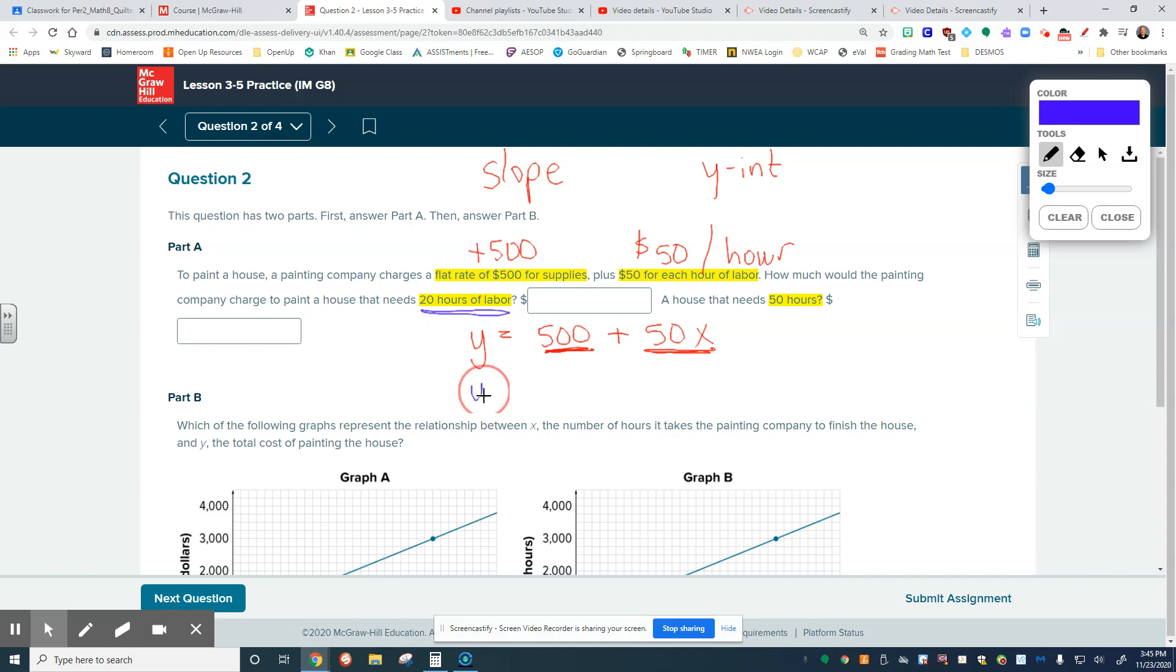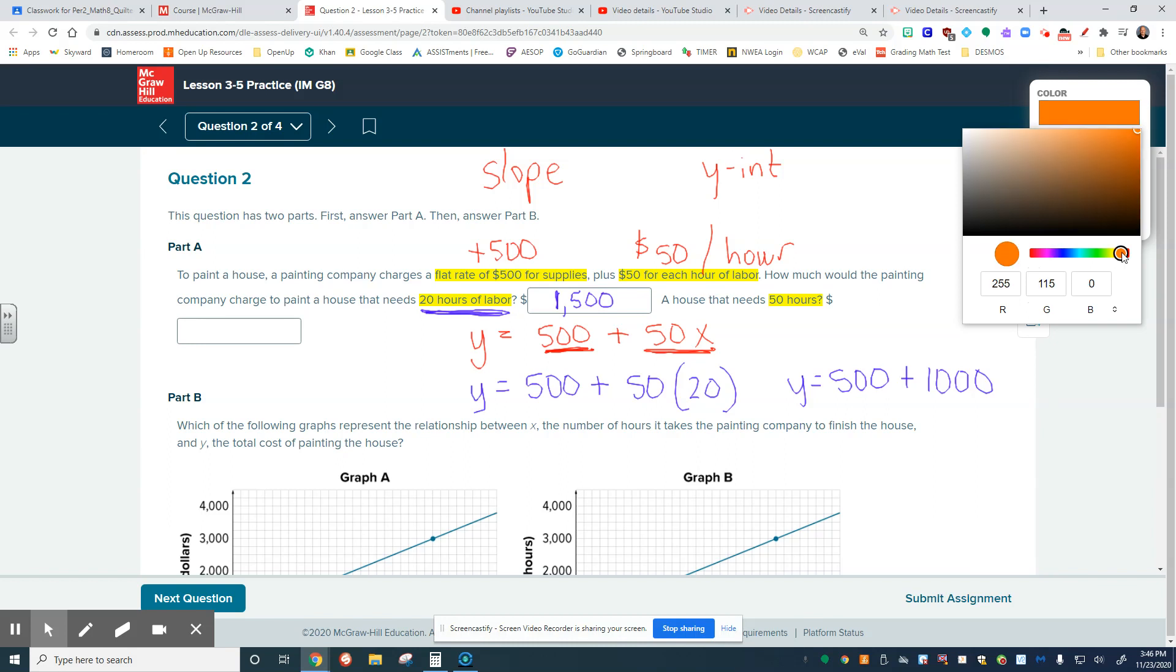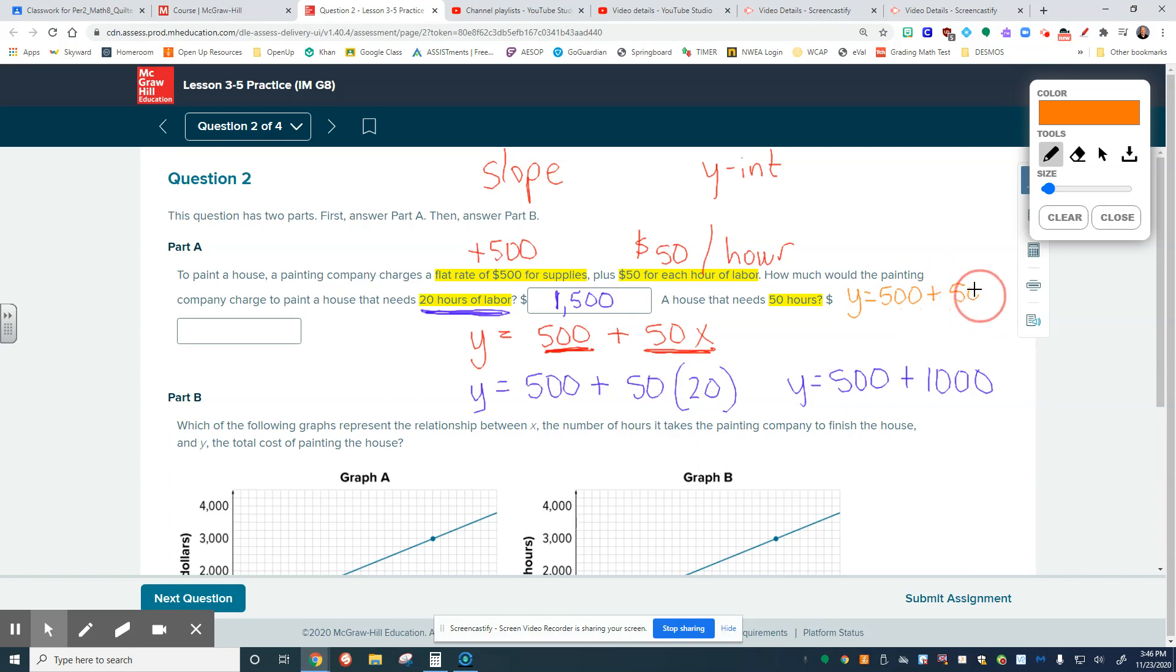And we know that we have an equation right here because this equation could tell us for any house that they are going to paint will work out because no matter what, we're paying $500 just for supplies and then we're paying $50 an hour just for the house. With that information, what we can do is we can now go ahead and take our 20 hours of labor and we could say, okay, what's my total cost going to be for a house when they spend 20 hours on it? Well, if I spend $500 on supplies plus $50 for 20 hours, what I'm actually going to spend here is I'm going to spend $500 plus another $1,000 in labor, which means that I'm going to spend $1,500 to paint a house with 20 hours of labor. Your turn. Go ahead and figure out how much will it cost you to paint a house with 50 hours of labor. There's your equation.